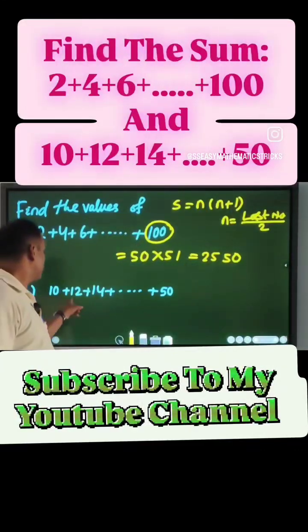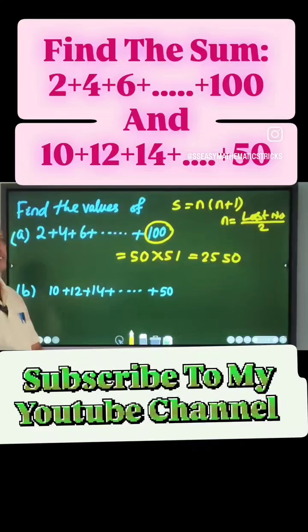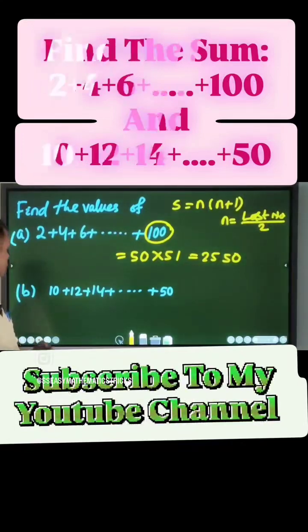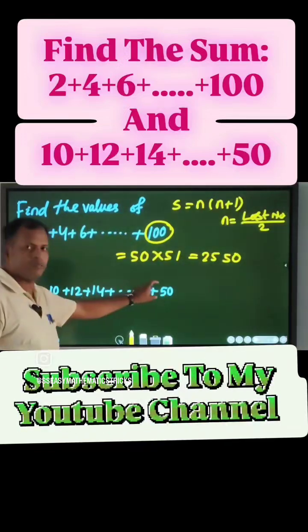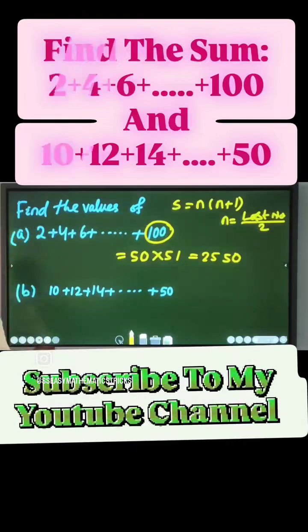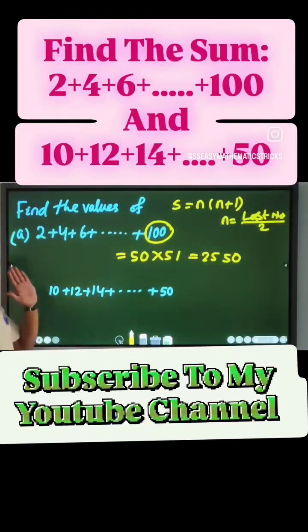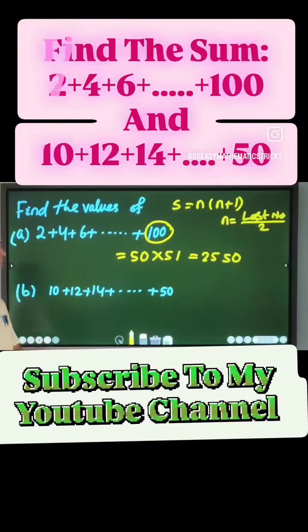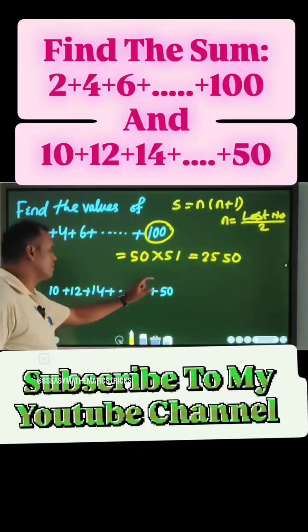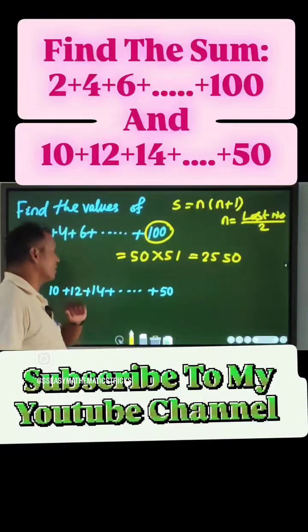Similarly we find second series. So here also sum of even numbers but not from start, not the first even number. We find sum of even numbers from 10 to 50.